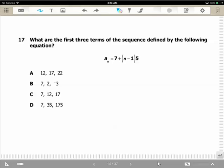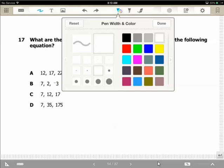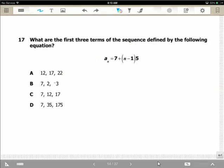Nevada Virtual Academy, we are back. The game proficiency exam, problem number 17: What are the first three terms of the sequence defined by the following equation? a_n equals 7 plus (n minus 1) multiplied by 5. What can we do? Okay, you have your four options. Obviously for this type of problem, you know, no difficulty for every one of you.